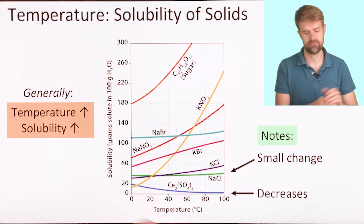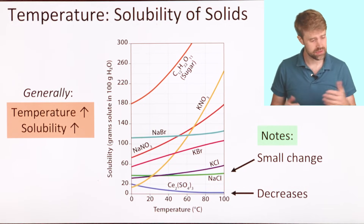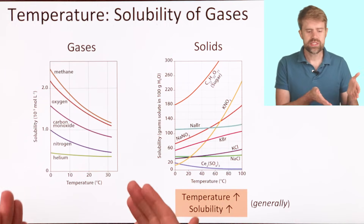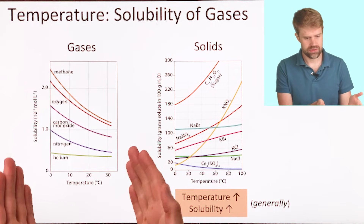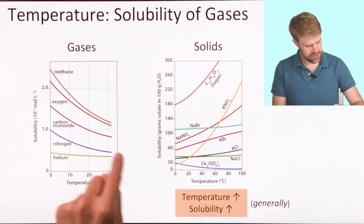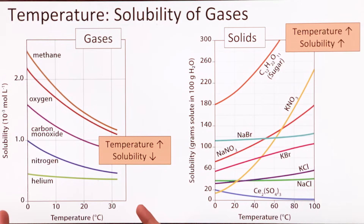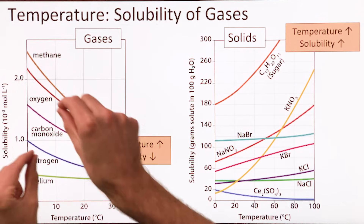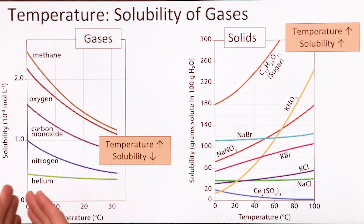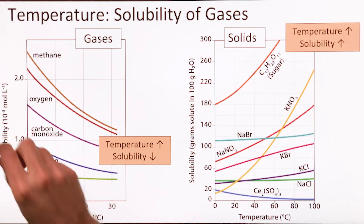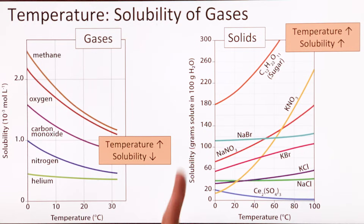That's the main point for solids. Now, let's see how temperature affects the solubility of gases. For gases, we see pretty much the opposite trend that we see for solids. Here's a solubility graph for gases — these lines are some different gases. The pattern is different here. In this case, the gas solubility goes down as temperature increases. For gases, when you increase the temperature of the solution, the solubility decreases. It's the reverse of what we see with solids.